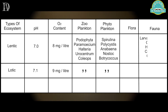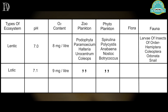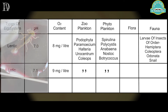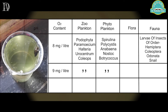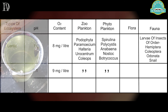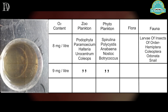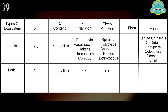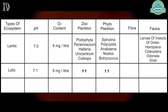In zooplankton, larvae of insects of Hemiptera, Coleoptera, and Odonata were found, and some mollusks were also found in the Lentic ecosystem. But in the Lotic system, no larval forms could be found, and this was the result of the study.